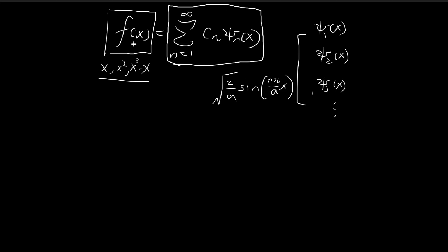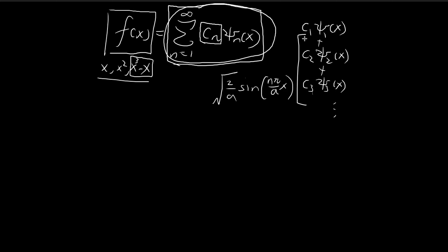So if I'm given a function, let's say x³ minus x, I can establish this equality by tweaking these constants. We take c1 multiplied by ξ1, c2 multiplied by ξ2, c3 multiplied by ξ3, and then add them all up — that is what this summation term means. As we tweak the constants c1, c2, c3, we can make this whole expression equal to the left-hand side function, in this case x³ minus x.